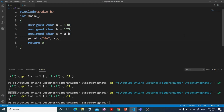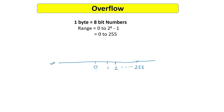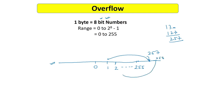The number line for 8-bit unsigned representation goes from 0 to 255. When the answer overflows — say 257 — the compiler wraps around circularly: 257 maps to 1, 258 maps to 2, 259 maps to 3. The compiler does not give an error; it wraps around in a circular manner. This behavior is explained in detail in the data type video in the C programming playlist.